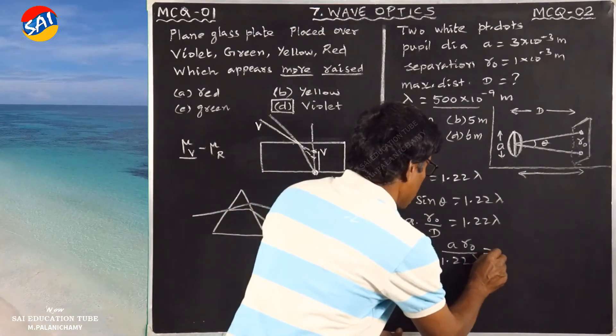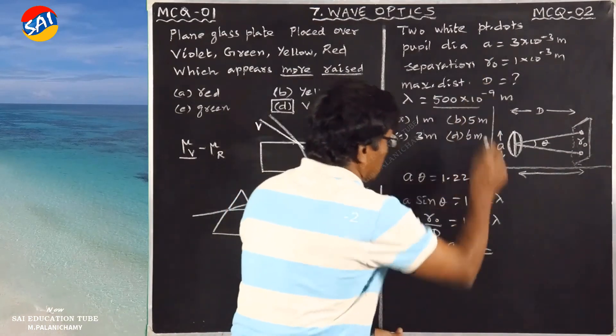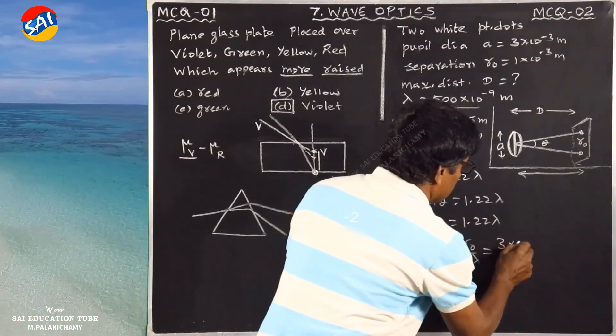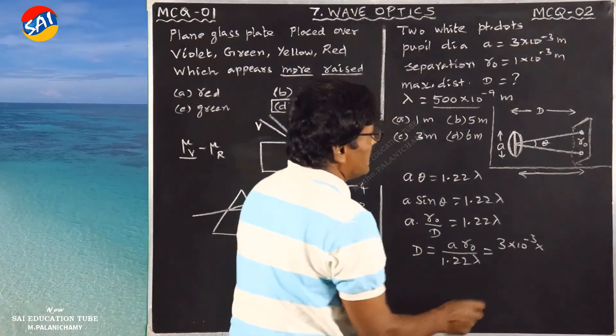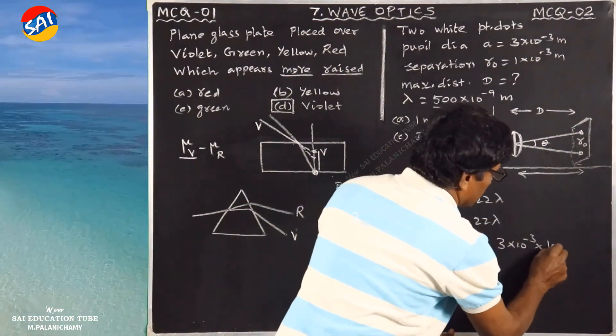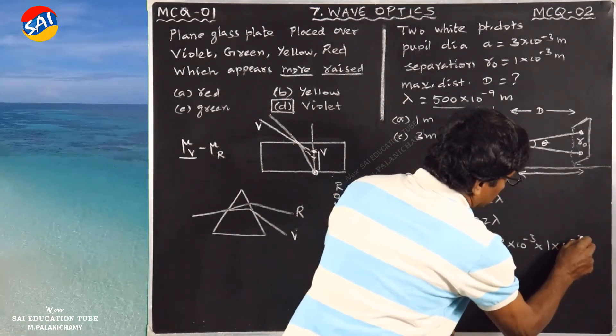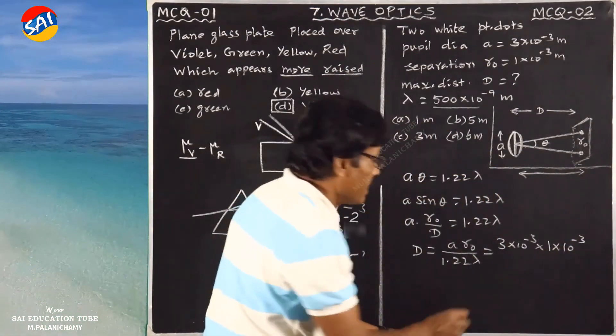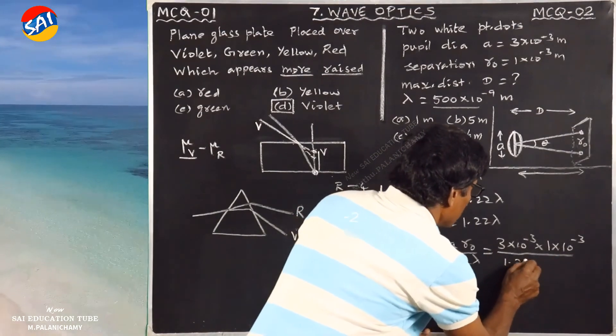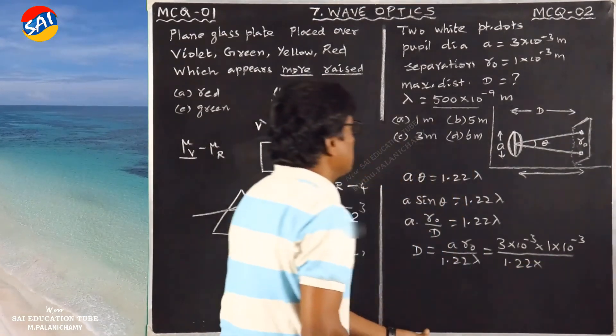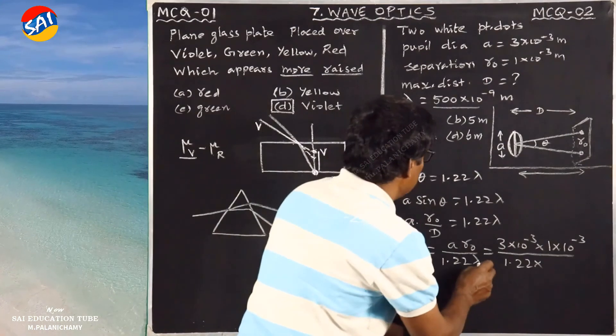Now substituting values: A is equal to 3 into 10 power minus 3. R0 equals 1 into 10 power minus 3 divided by 1.22 into lambda, where lambda is 500.